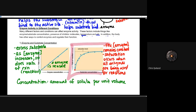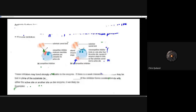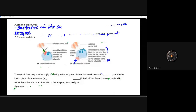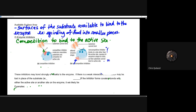Another factor that limits enzyme activity is available surface area. The surface area of the substrate available to bind to the enzyme strongly dictates how quickly the reaction can take place — imagine grinding food into smaller pieces versus having bigger chunks. Smaller pieces provide more surface area for enzyme binding.